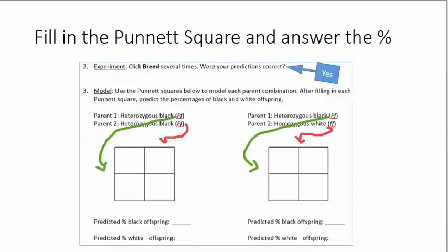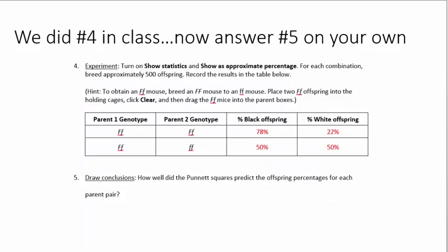Now you tell me the percentages for number 1B and C. We did number 2 in class, and we said yes. Now that we covered how to do a Punnett square, go ahead and try number 3 and provide the percentages below. You put one parent on the side and the other on top, and fill in your squares.